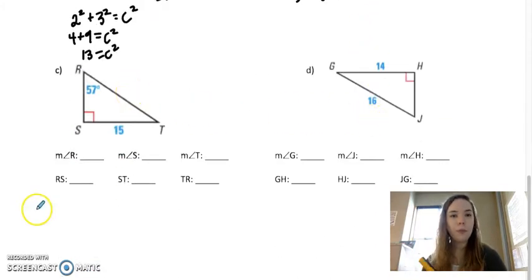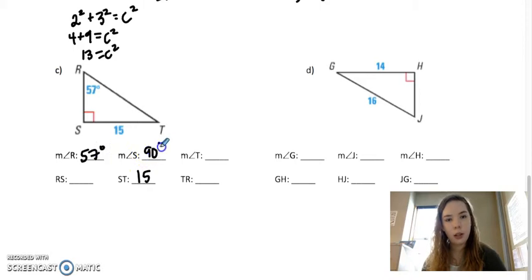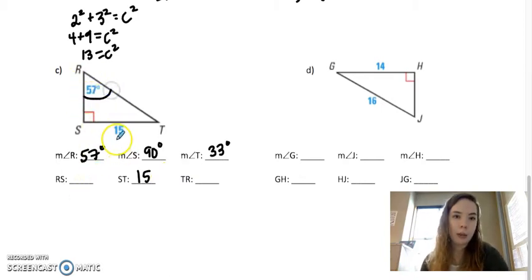Moving on. I know that ST is 15, angle R is 57, angle S is 90, which makes angle T 33, because these two have to add to 90. And now I just need to find my other two sides. So from angle 57, 15 is opposite.